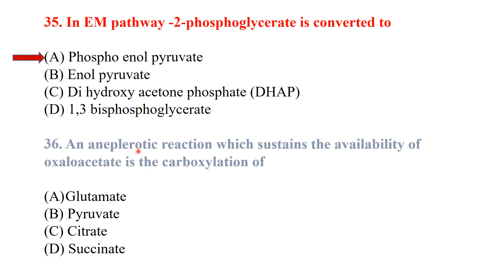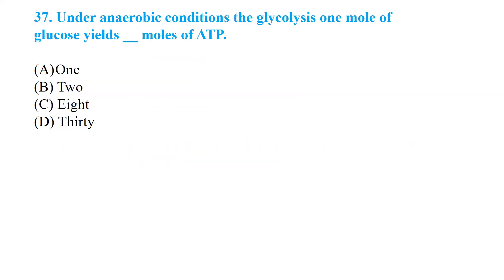The anaplerotic reaction which sustains the availability of oxaloacetic acid is the carboxylation of pyruvate. Under anaerobic conditions in glycolysis, one mole of glucose yields 2 moles of ATP.